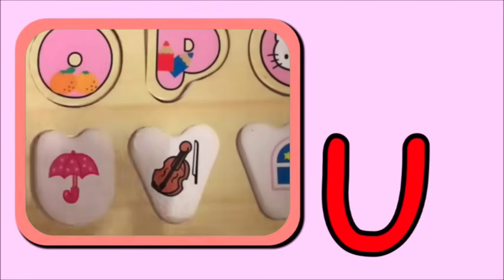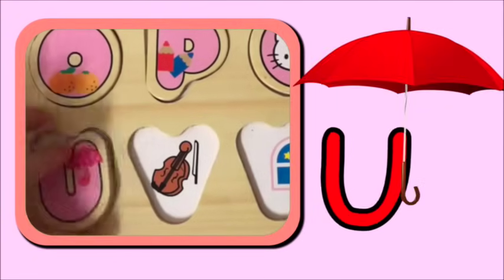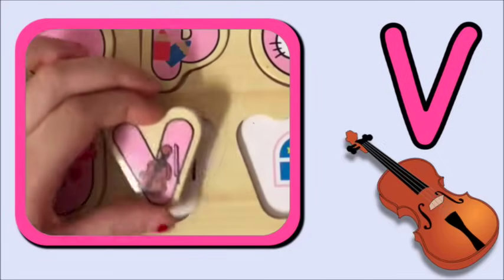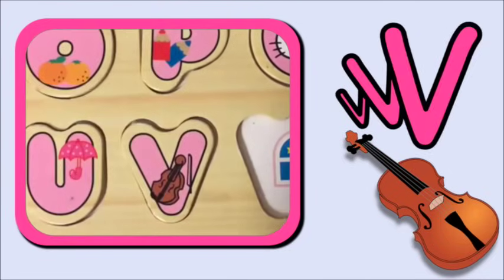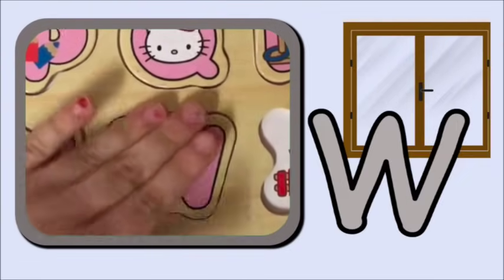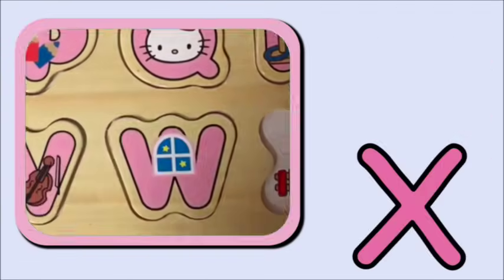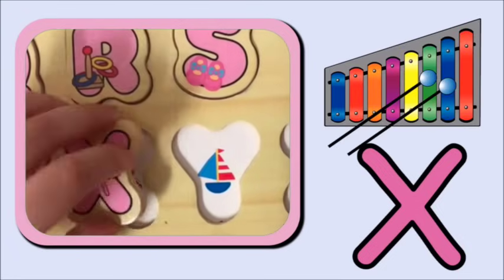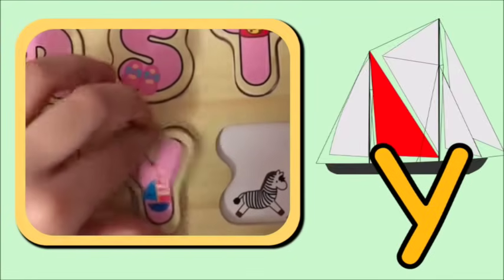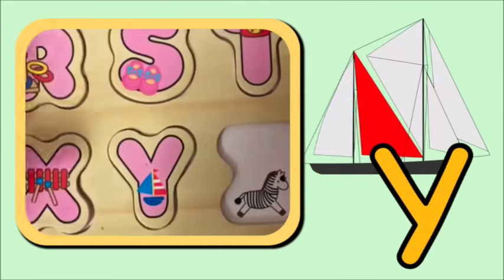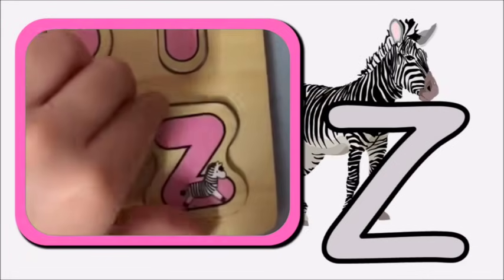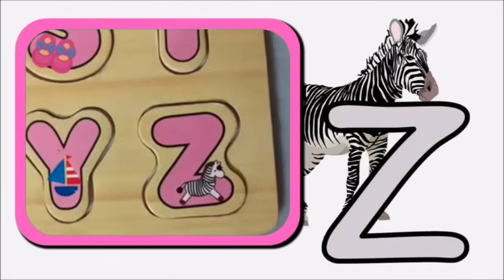U for umbrella. U, u. Umbrella. V for violin. V, v. Violin. W for window. W, w. Window. X for xylophone. X, x. Xylophone. Y for yacht. Y, y. Yacht. Z for zebra. Z, z. Zebra.